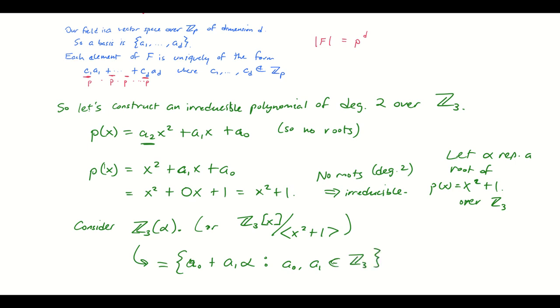Well, how many elements does that have? If our whole framework is correct, then we should have 3 to the second number of elements, that should be 9, but let's check. So I have these two elements here, 1 and alpha, that are linearly independent. So I can choose a0 and a1 independently.